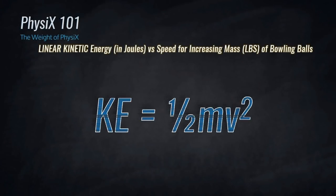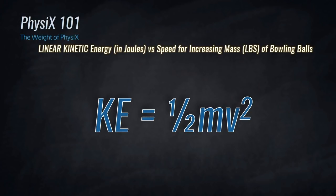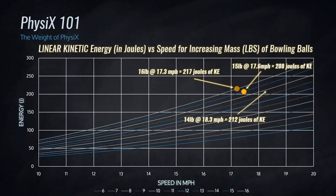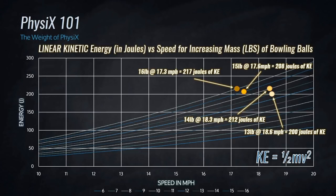That was an interesting test and we got some pretty fascinating results. There are a lot of equations that go into a single shot of bowling, but let's take a closer look at one of the more relevant formulas: kinetic energy. Kinetic energy equals one half the mass of the object times its velocity squared. My 15 pound ball at 17.6 miles per hour generated 208 joules. The 16 pound ball, despite being rolled slower, created 217 joules. My lighter 14 pound ball thrown at 18.3 miles per hour created 212 joules, and the 13 pound only generated about 200 joules of kinetic energy.